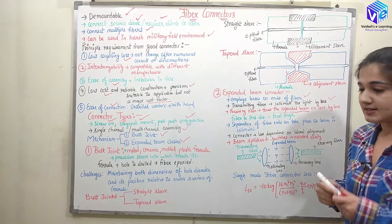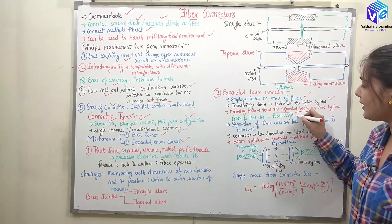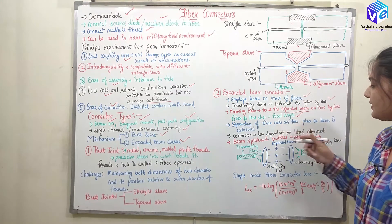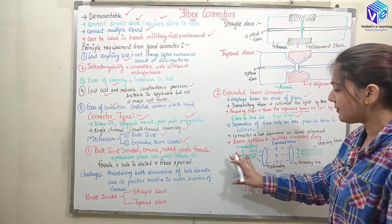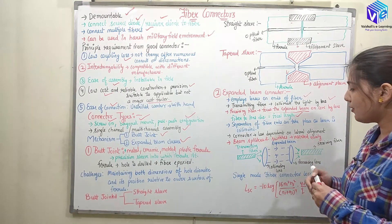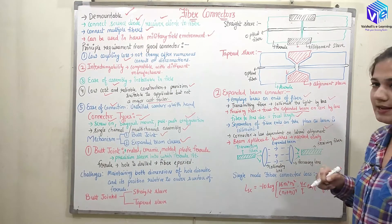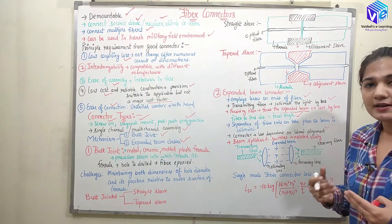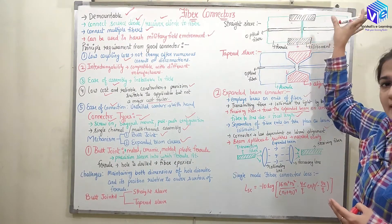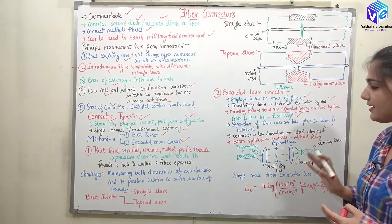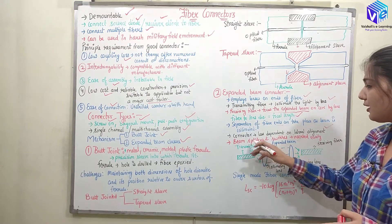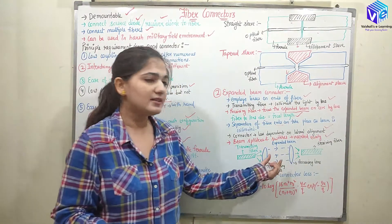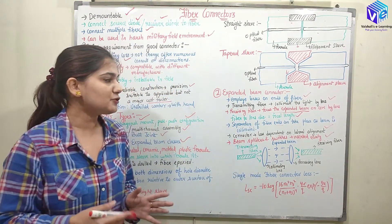The fiber-to-lens distance is equal to the focal length of the lens. Because the beam is collimated, the two fiber ends can be separated in distance. A key advantage is that this approach is less dependent on lateral alignment — in butt joint, lateral alignment was a major issue requiring precisely drilled holes. Additionally, beam splitters and switches can be easily inserted in the space between the two fibers.